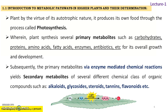Subsequently, the primary metabolites via enzyme-mediated chemical reactions yield secondary metabolites of several different chemical classes of organic compounds such as alkaloids, glycosides, steroids, tannins, flavonoids, etc. Plants produce primary metabolites via photosynthesis in various parts of the plant — in the cytosol, in plastids, and various cellular compartments — and how they produce primary and secondary metabolites is what we will study in detail.